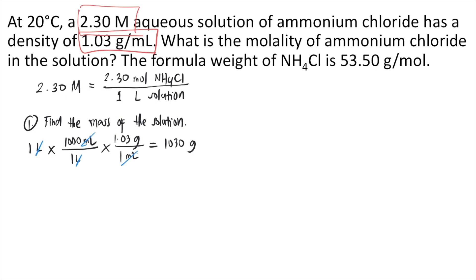Step number two: find the mass of the solute. In the problem, we are given 2.30 moles of the solute. We are given the molar mass, which is 53.50 grams per mole. That means for every one mole, that's equivalent to 53.50 grams. The moles cancel out, and this equals 123.05 grams of solute.